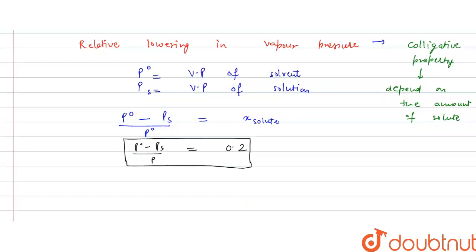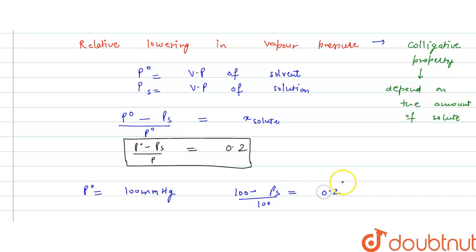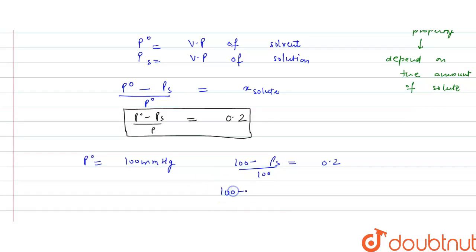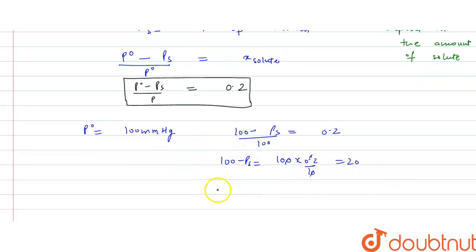We can also calculate the actual vapor pressure of the solution. P0 is given as 100 mmHg. Substituting: (100 − Ps) / 100 = 0.2, so 100 − Ps = 20, therefore Ps = 80 mmHg.